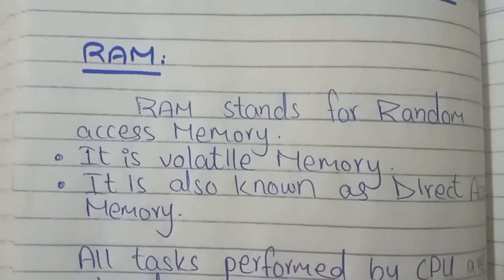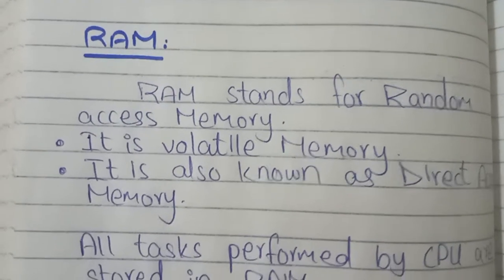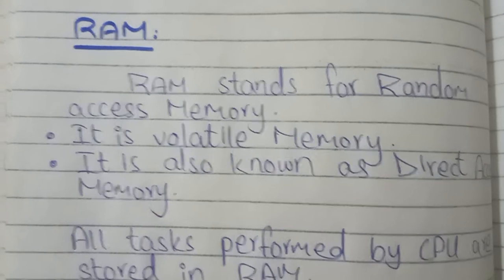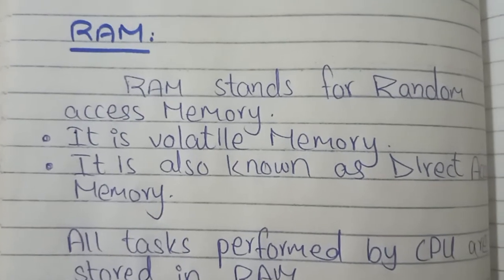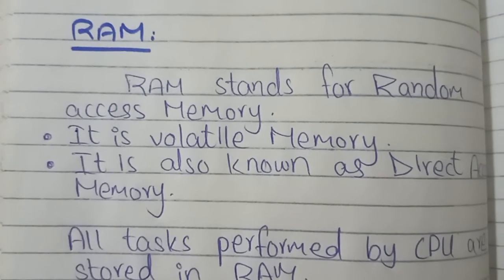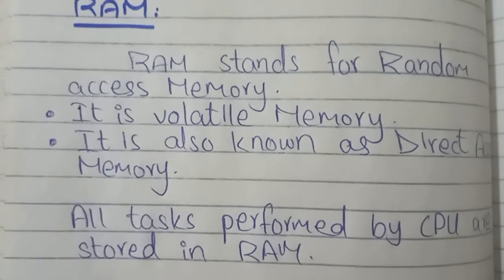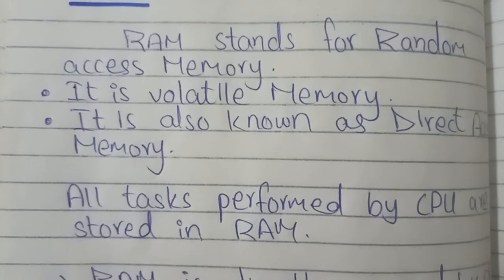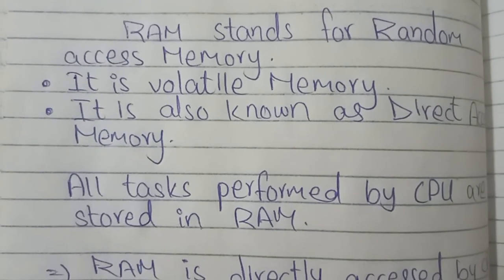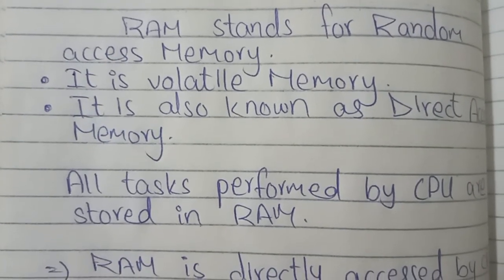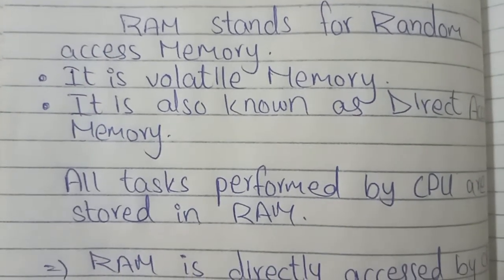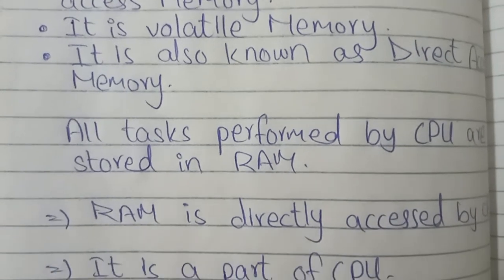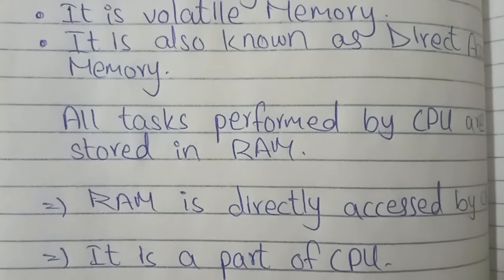RAM is also known as Direct Access Memory. This means that it is directly linked to the CPU. All tasks performed by the CPU are stored in RAM. RAM is directly accessed by the CPU.